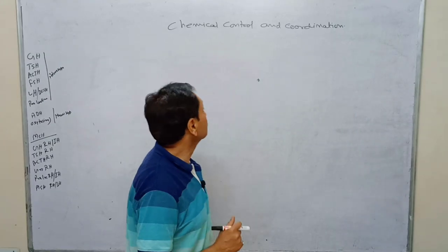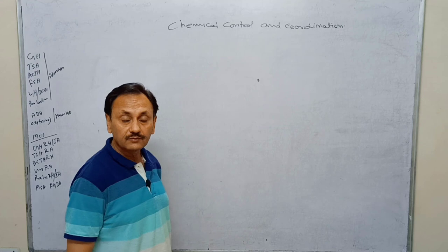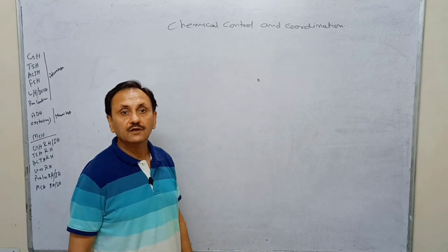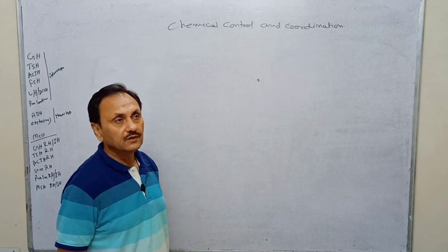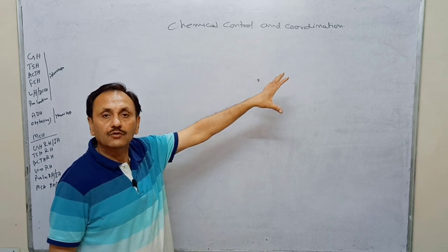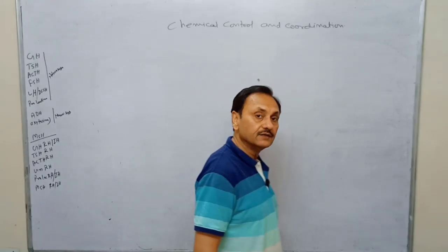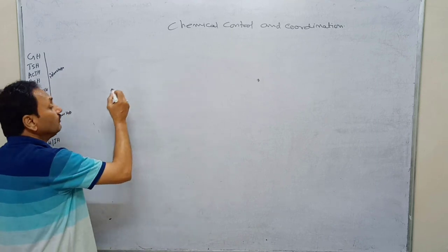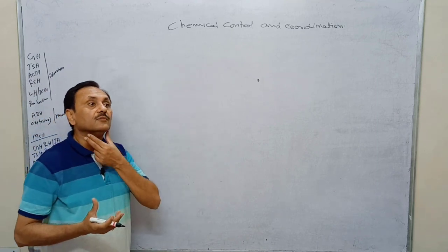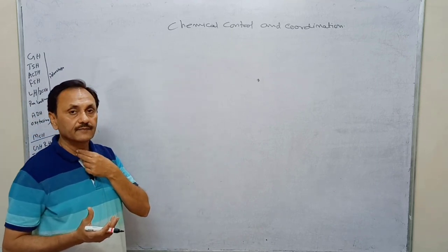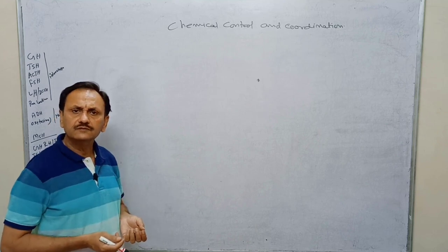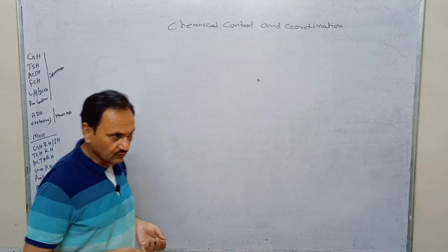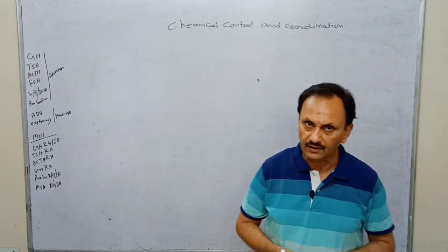This chemical control and coordination is part of the control and coordination we have discussed in previous lectures. Neural control and coordination, and certain parts of chemical control and coordination — that is the thyroid and adrenalin. The thyroid is located on both sides of the trachea and produces T3 and T4, which are mainly responsible for controlling BMR, that is the basal metabolic rate.